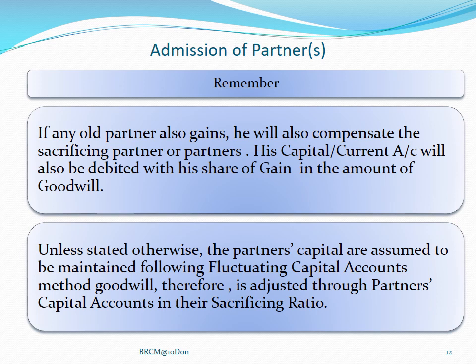An important point to remember: if any old partner also gains — for example, there were three partners, we admitted a fourth, and in the new PSR, A and B are sacrificing but C is also gaining along with the new partner D — then if any old partner also gains, he will also compensate the sacrificing partner or partners. That means his capital or current account will also be debited with the share of gain in the amount of goodwill — whatever he is going to gain in goodwill, he must also pay for his share.